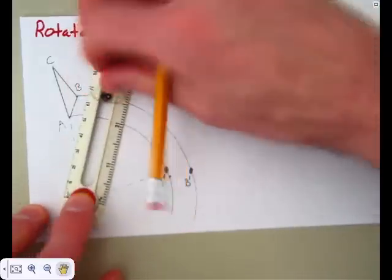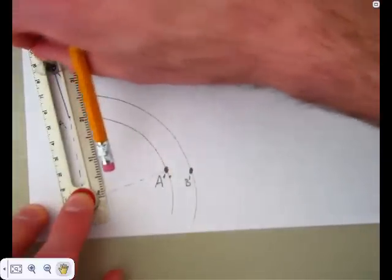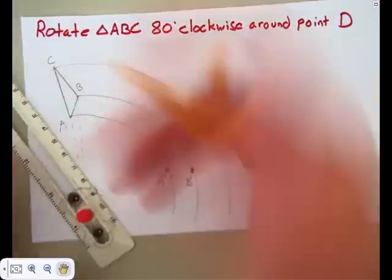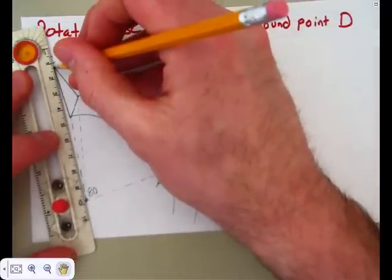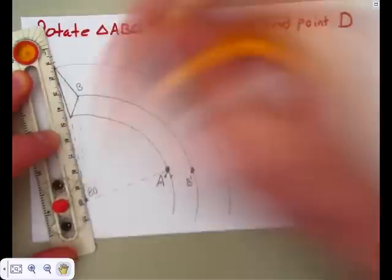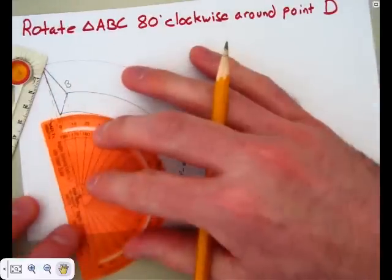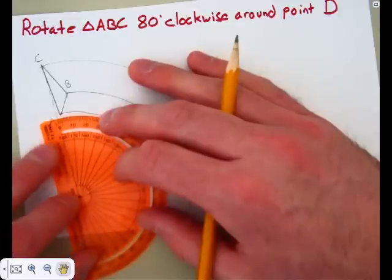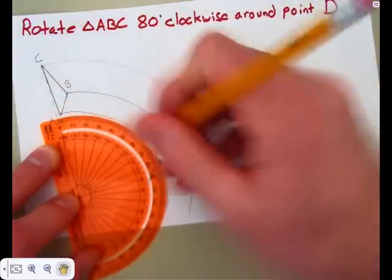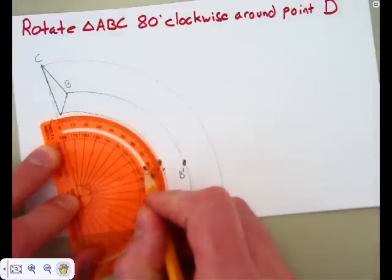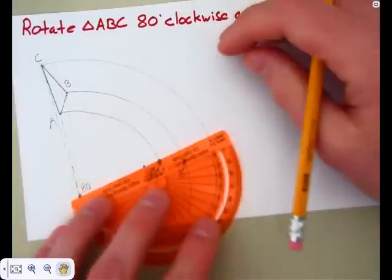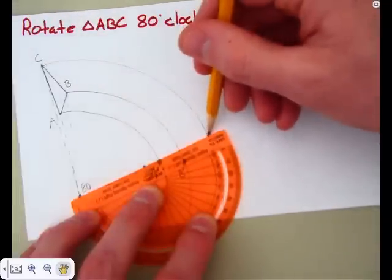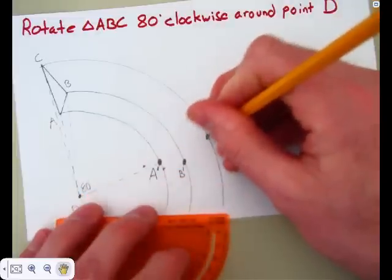And we're just going to repeat the process here for point C. Lock it into place. Point C will travel around this path. And again, it's going to be too far, so I'm going to use the straight edge to connect point C to point D. That gives me my zero degree mark. So I line up the protractor, vertex at point D, zero degree right on that line. 80 degrees, I'm going to go on the inside here. My straight edge lines up to D, that little tick mark. Point C is going to be following this path around. There is where point C prime will be.